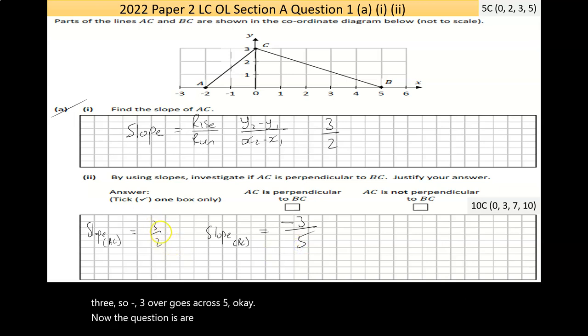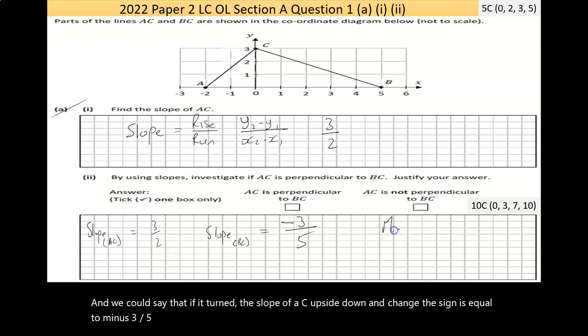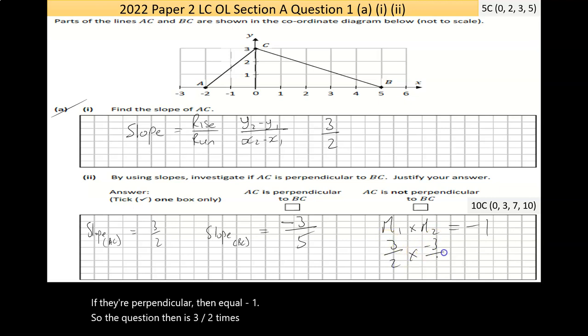Now, the question is, are they perpendicular? They're not parallel, because they're not the same. And we could say, if I turn the slope of AC upside down and change the sign, is it equal to minus three over five? But the better method would be, if I multiply both slopes together, if they're perpendicular, they'll equal negative one.